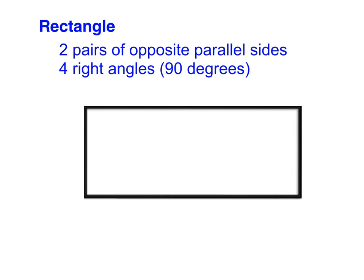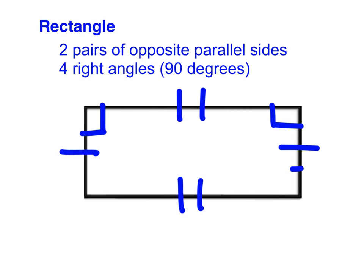A rectangle has two pairs of opposite parallel sides — this side and this side are parallel to each other, and the top and the bottom as well, just like a parallelogram. But what makes a rectangle a little more special is that it has four right angles, which are all 90 degrees.